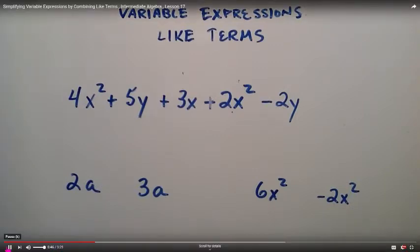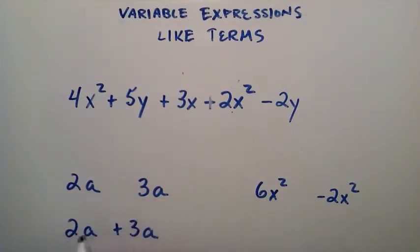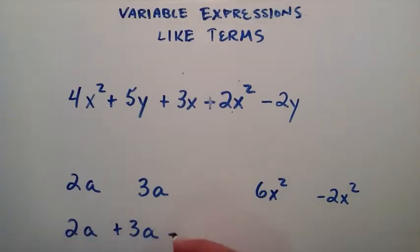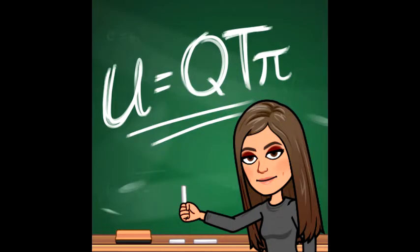So why do we want to know that we have like terms? Well, if we have like terms, we can add and subtract them together just like we would regular numbers. So if you have 2a and you want to add 3a to it, because these are like terms, you simply look at the coefficients and add the coefficients together. So the coefficient 2 plus 3 is equal to 5, and then we write down the a.